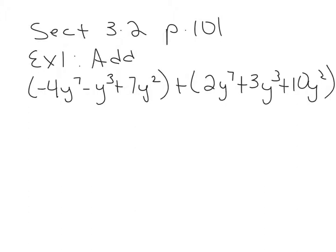The first thing we're going to do is identify the terms with the highest degree, and that would be this y^7 and this y^7. They are like terms, so those terms are going to get added together. Let's mark them here with red. When I add them — just a quick review — to add like terms you just add the coefficients. Negative 4 plus 2 makes negative 2, and the variable and exponents stay the same.